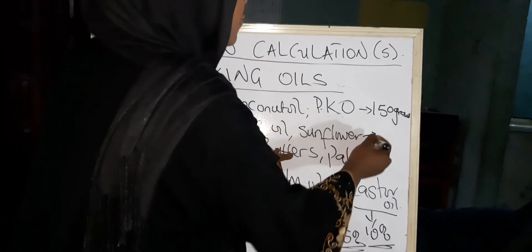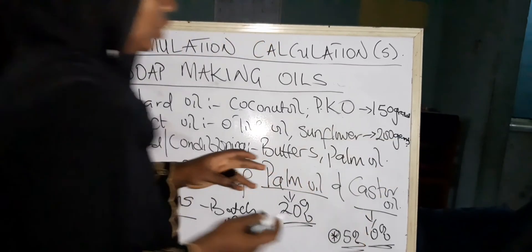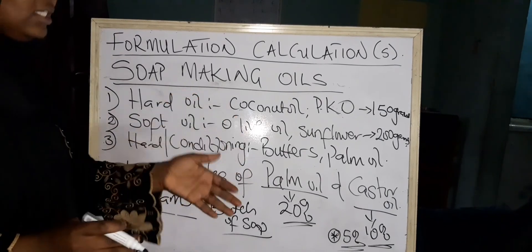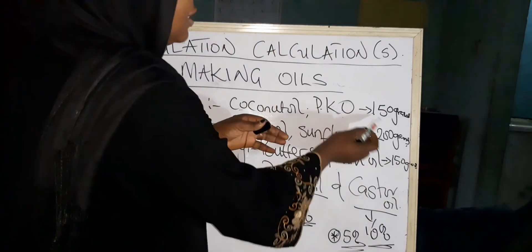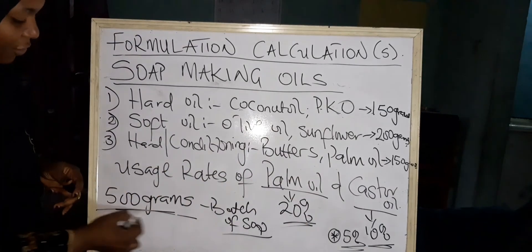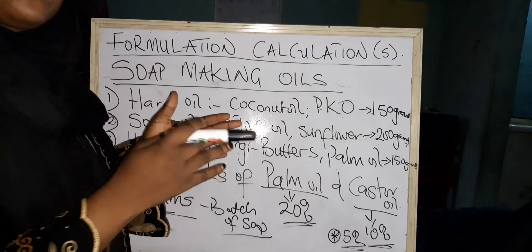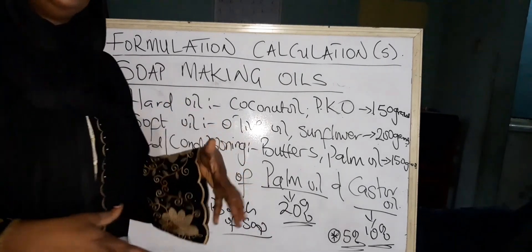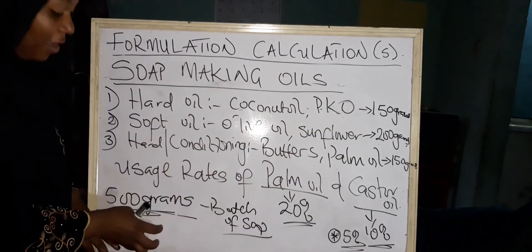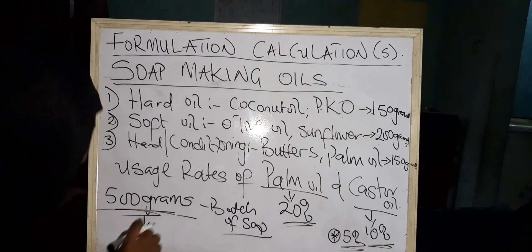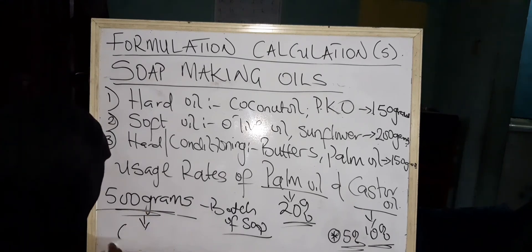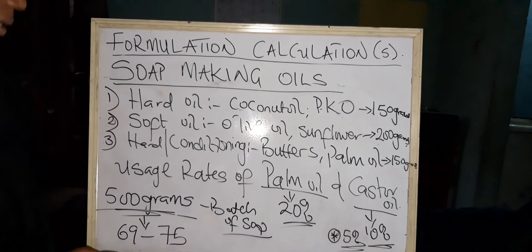Your soft oil of choice — even if not olive oil or sunflower oil, whatever soft oil you choose — should go in at 200 grams. Your hard conditioning oils, which are your butters and palm oil, should not go beyond 150 grams. So: 150 plus 200 plus 150 equals 500 grams — your full oil batch. Then you go in with your lye at a proportion of no less than 69 to 75 grams for 500 grams of soap.